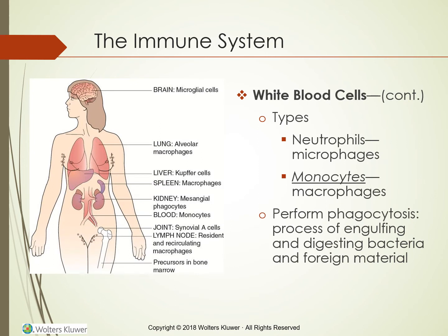Neutrophils and monocytes are phagocytes — cells that perform phagocytosis, the process of engulfing and digesting bacteria and foreign material. Phagocytes are stationary, fixed, or mobile. Neutrophils, also called microphages because they are small, are present in blood and migrate to tissue as necessary after a cell-mediated response. Monocytes, also called macrophages because they are large, are present in tissues such as the lungs, liver, lymph nodes, spleen, and peritoneum, and they also migrate after a cell-mediated response. The mononuclear phagocyte system consisting of monocytes and lymphocytes was formerly known as the reticuloendothelial system.